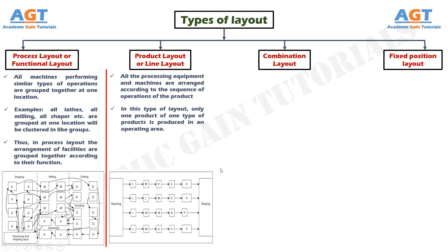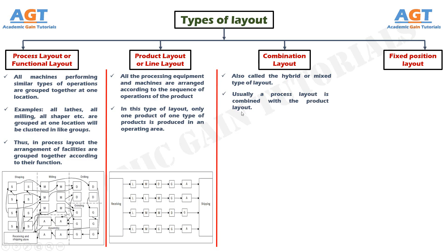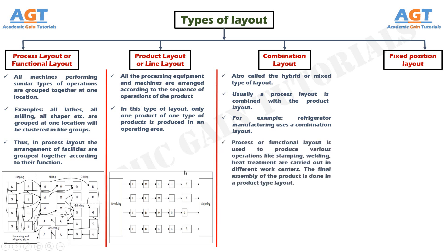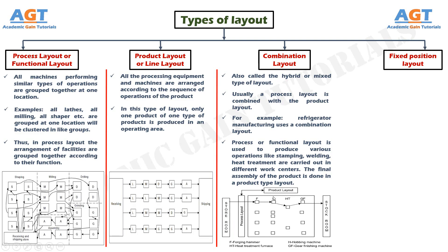Combination layout. It is also called the hybrid or mixed type of layout. Usually a process layout is combined with the product layout. For example, refrigerator manufacturing uses a combination layout. Process or functional layout is used to produce various operations like stamping, welding, and heat treatment, which are carried out in different work centers. The final assembly of the product is done in a product type layout. In this figure, we can see a combination layout where individual parts go through all required processes using a process layout, then all processed parts are assembled together in a product layout to form the final product.